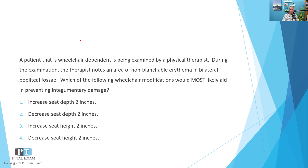A patient who is wheelchair dependent is being examined by a physical therapist. During the examination, the therapist notes an area of non-blanchable erythema in bilateral popliteal fossae. Which of the following wheelchair modifications would most likely aid in preventing integumentary damage? Option one: increase seat depth two inches. Option two: decrease seat depth two inches. Option three: increase seat height two inches. Option four: decrease seat height two inches.